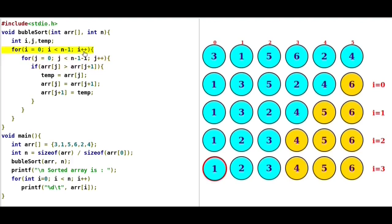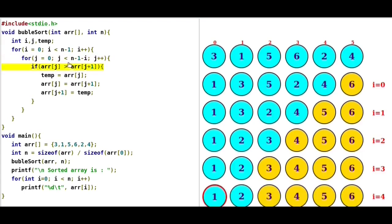I becomes 3, J resets to 0. J and J+1 are compared — proper order, no swap. J incremented; again J and J+1 are in proper order. J increments and the inner loop terminates. I becomes 4, J again starts at 0. J and J+1 are compared — same order. The inner loop terminates, and the outer loop also terminates. After completion of all 5 passes, all elements are in sorted order.